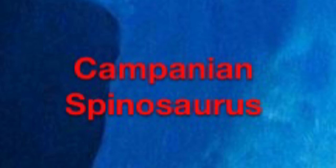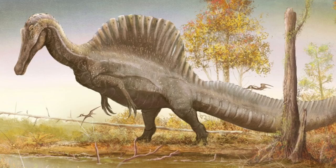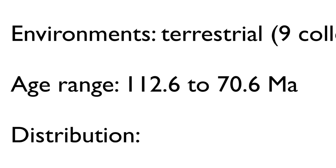Campanian Spinosaurus. We all know that Spinosaurus lived 95 million years ago, but there has been potential material found in sediments dating to roughly 70 million years ago. This date has even been featured on the Fossil Works article for the dinosaur.